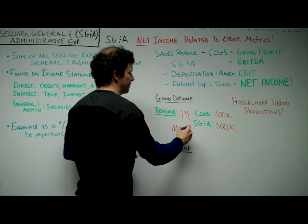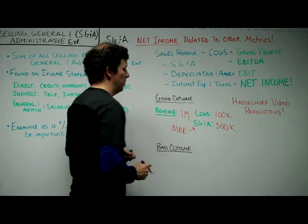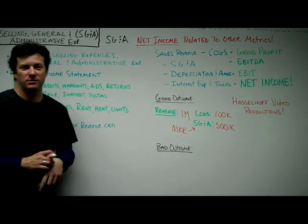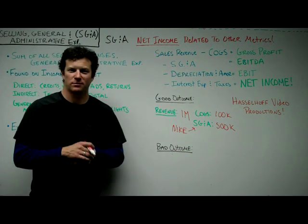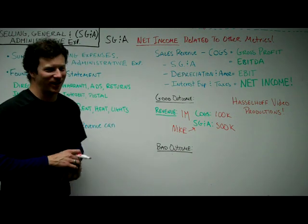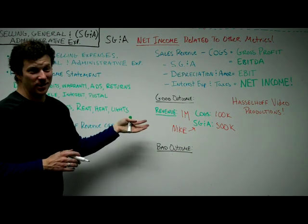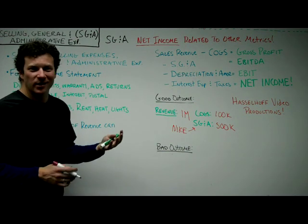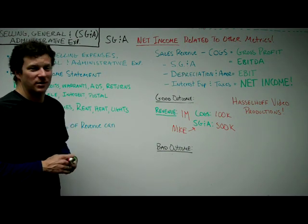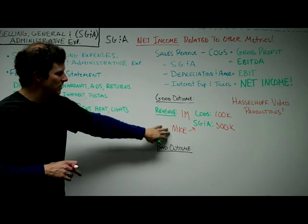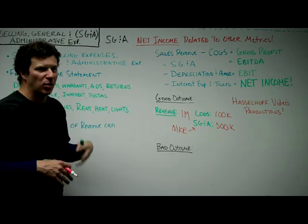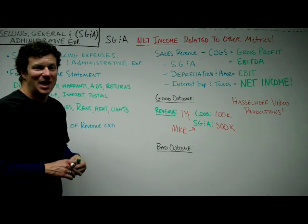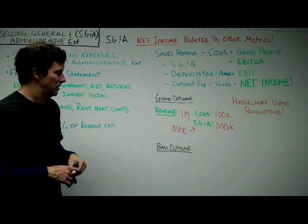You can imagine for companies like Nike, this is a huge deal. It doesn't cost them very much to produce shoes, but they spend a lot of money on Tiger Woods, Michael Jordan, and their advertising. Companies that spend a lot on SG&A tend to be brand-oriented, advertising-heavy, salary-paying types of companies.